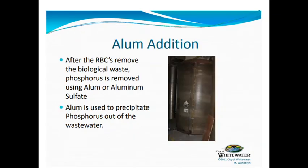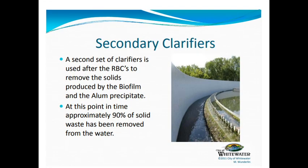Then they add a chemical called alum — it's a powder. What that does is it binds to the nutrient phosphorus, which is the main thing that causes eutrophication. So they pull out the phosphorus, and then the water goes to a second round of clarifiers.